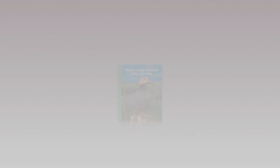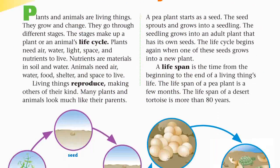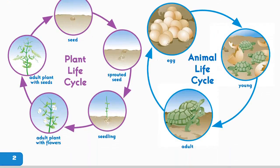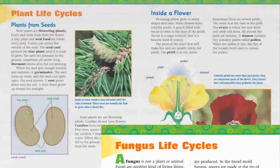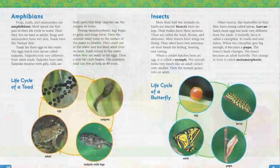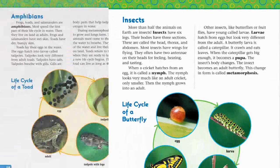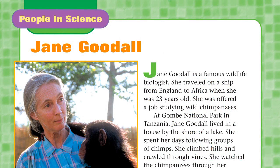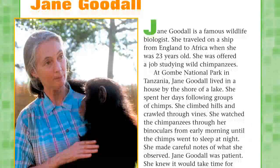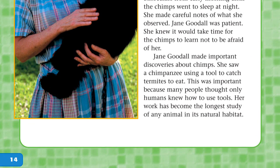In the Delta Science Reader Plant and Animal Life Cycles, students read about the life cycles of a variety of plants, animals, and fungi. They learn how some living things grow, change, and reproduce. They also read about a famous wildlife biologist, Jane Goodall, and her unique long-term study of chimpanzees in Africa.